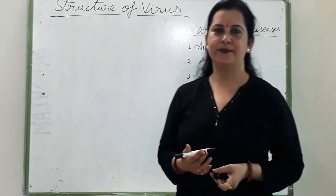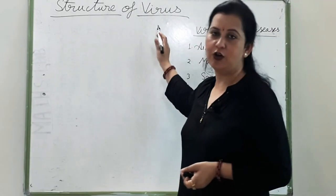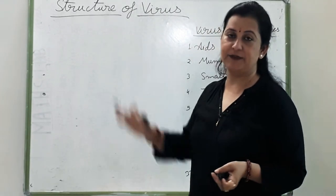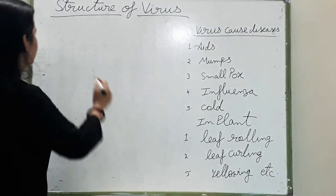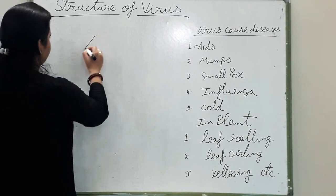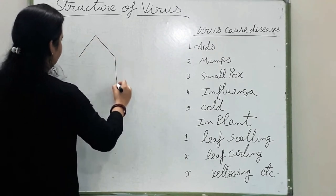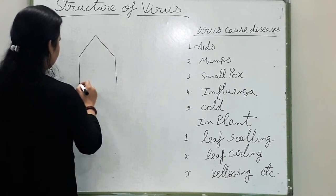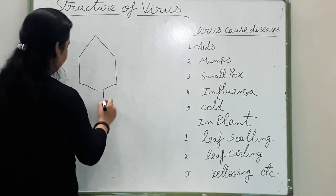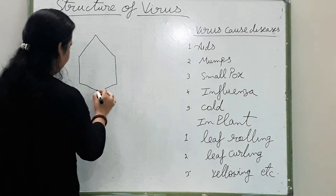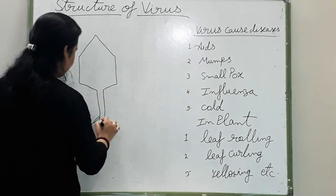Dear students, now we study about the structure of virus — virus ki saranchina kaise hoti hai. Let's draw the diagram. This is the head of the virus — virus ka head hai. And this is the tail.